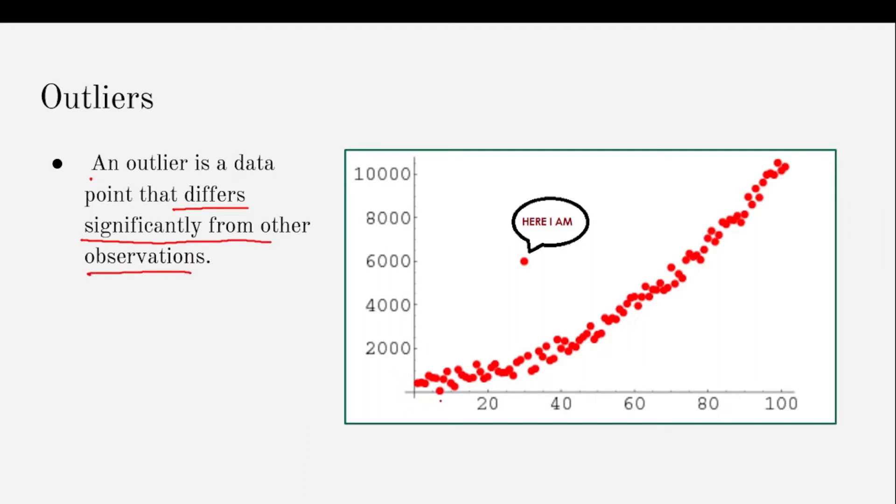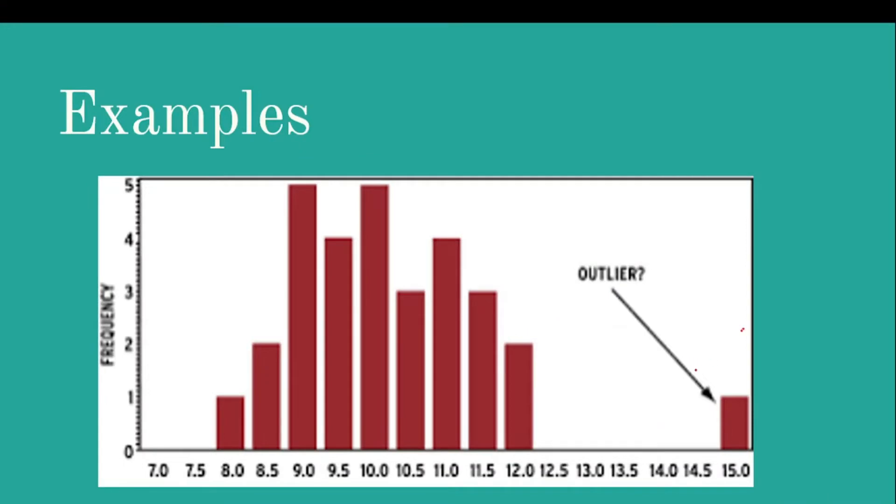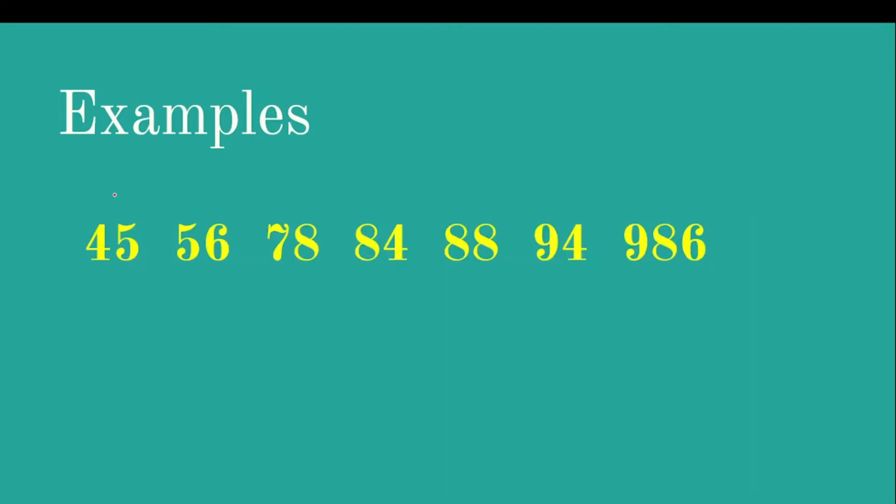If we observe this scatter plot, most of the values follow a well-defined pattern, but there is one value which is very different from all of them. We term this value as an outlier. Let us see a few more examples. If we observe this bar chart, clearly we can see that this is an outlier because it is very different from the general distribution of all the points. Considering another example, I can clearly see that the number 986 is way larger than all the other numbers, so this number is an outlier.